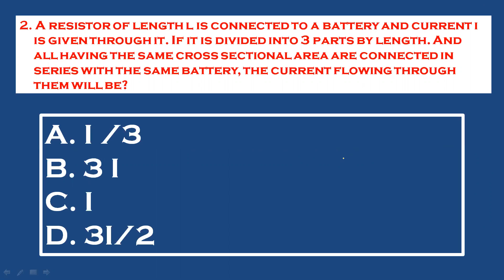Question 2: The resistance is cut into 3 equal parts. Each piece has resistance R/3, because resistance is directly proportional to length. All pieces having the same cross-sectional area are connected in series with the same battery. The current flowing through them will be what? Total resistance is R/3 + R/3 + R/3.